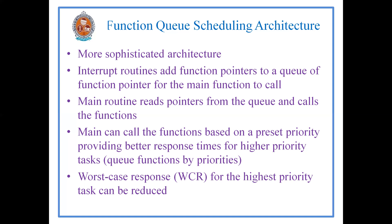In round robin with interrupts, interrupts are given high priority over task code. So the high priority interrupts are executed first. Suppose while task code is being executed and an interrupt occurs, the task code will be suspended and the interrupt will be executed. However, in round robin with interrupts, if a low priority interrupt is being executed and a high priority interrupt occurs, that high priority interrupt has to wait until the low priority one completes — that is the key limitation.